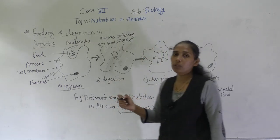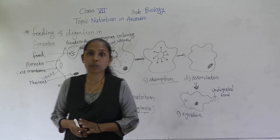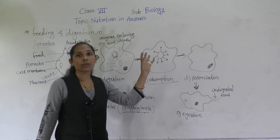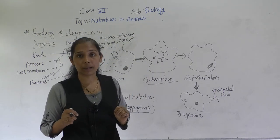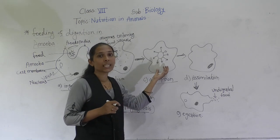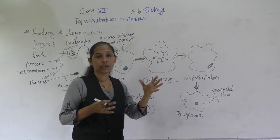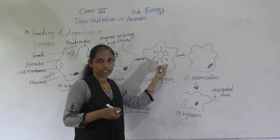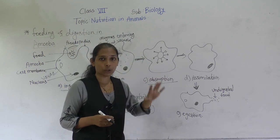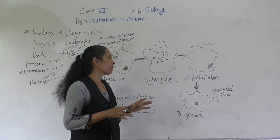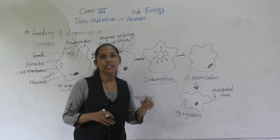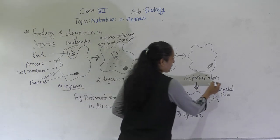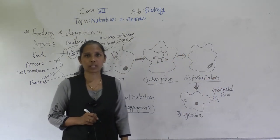After digestion, the next process is absorption. Whatever food has been digested, it gets diffused into the cytoplasm — meaning the cytoplasm absorbs all the digested food. With the help of the cytoplasm, the nutrients get transported to the different parts of the amoeba.